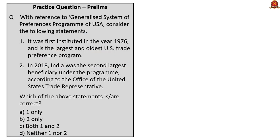With reference to the Generalized System of Preferences program of the USA, consider the following statements. Statement 1 says it was first instituted in the year 1976 and is the largest and oldest US trade preference program — this is correct. Statement 2 says that in 2018, India was the second largest beneficiary under the program according to the Office of the United States Trade Representative — this is incorrect, as India was actually the largest beneficiary, not the second largest. So the correct answer is option A, statement 1 only.